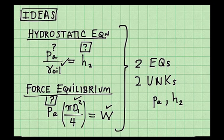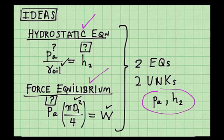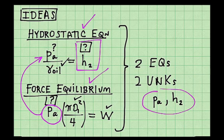To summarize, I have two equations and two unknown variables. My plan is to solve this equation for the pressure at A, and then substitute it back in here and solve for my problem goal, which is the column rise H2.